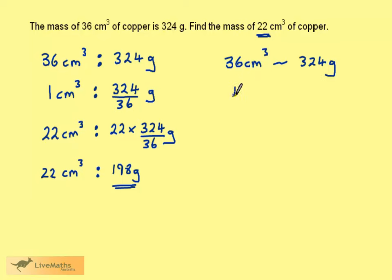We divide both sides by 36 to find the mass of 1 cm³ of copper. And then, since we want 22 cm³, we multiply both sides by 22.